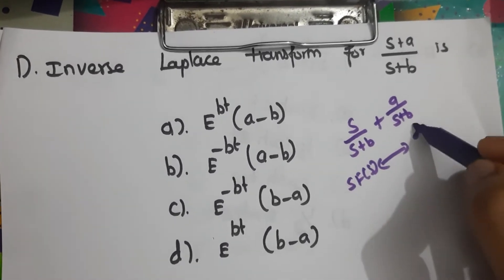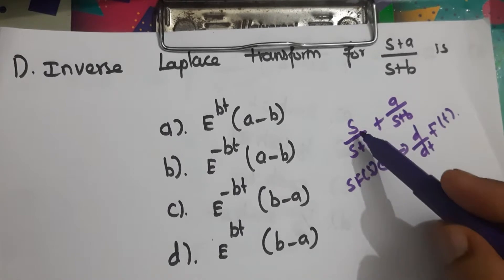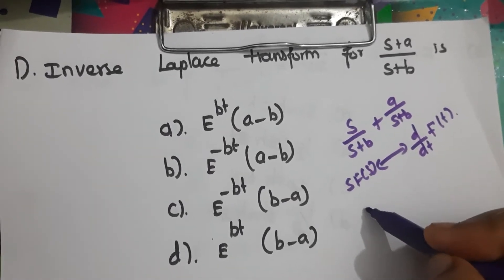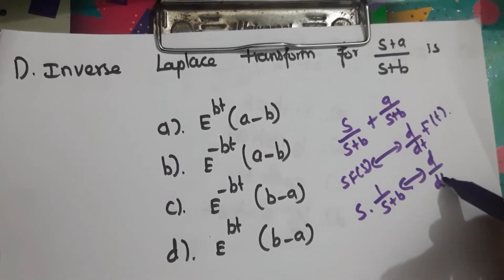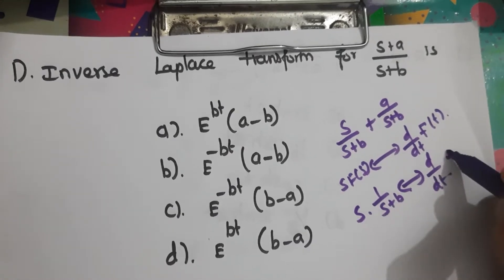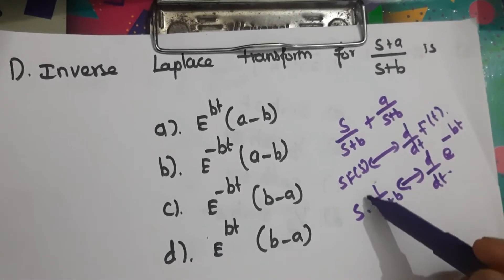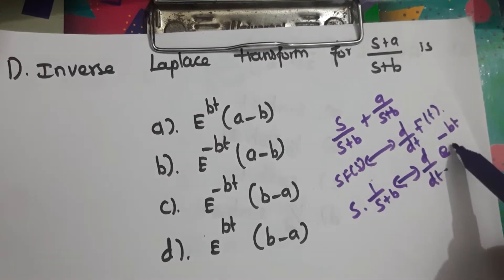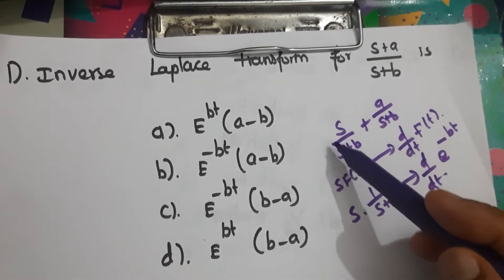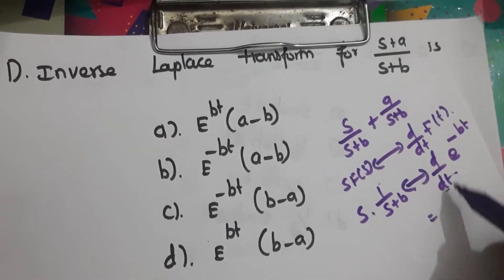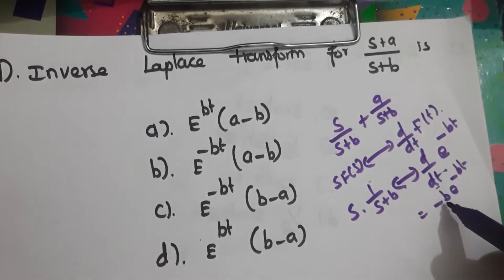For the first term, use the property that s·F(s) corresponds to differentiation of f(t). So this is s times 1/(s+b). We know the inverse Laplace of 1/(s+b) is e^(-bt), so differentiating gives minus b·e^(-bt).